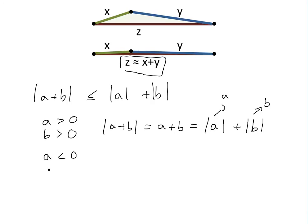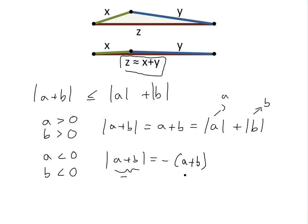If A is less than zero and B is less than zero, then the absolute value of A plus B — which will be negative inside — still adds up, and this equals the negative of A plus B, because taking the absolute value makes it positive. The right-hand side also equals the sum of the absolute values, because the signs are the same, so the inequality holds with equality here too.